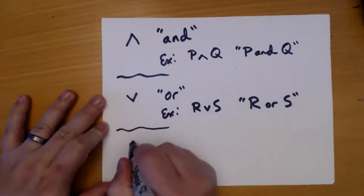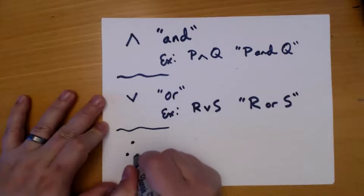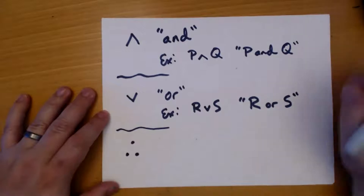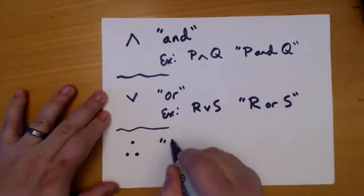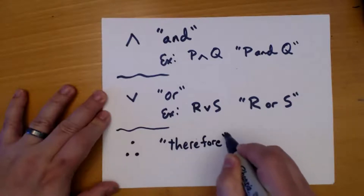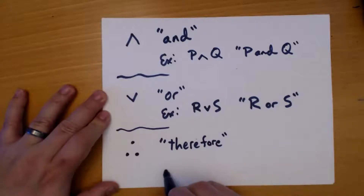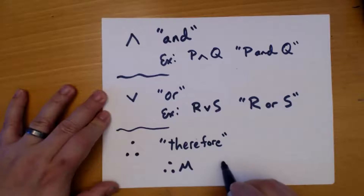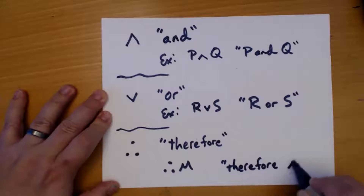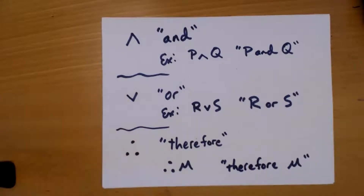The last one looks like three dots in the shape of a triangle, and this means 'therefore.' So if I wrote the triple dot followed by M, that would mean 'therefore M.' Now I'm going to give many examples of all of these, but right now it's important that we get them copied down.